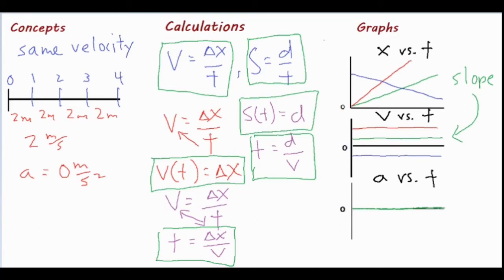Just a reminder: all of these graphs, if drawn on the acceleration versus time graph — the green, red, and blue lines — would all fall right on zero, because we have no change in velocity and therefore zero acceleration.